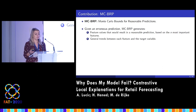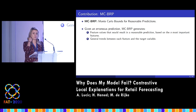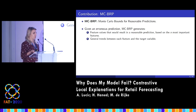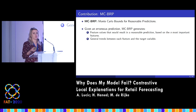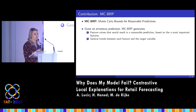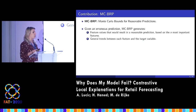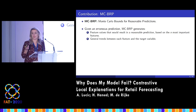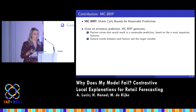The name of our method is Monte Carlo Bounds for Reasonable Predictions. We're not going to go into the details of the method, so if you're interested, you should read the paper. Basically, given an erroneous prediction — where a large error can be defined, we choose a particular definition but you can choose your own — our method generates feature values that would result in a reasonable prediction based on the top most important features. In our case, we use Lime to get the most important features, but you can use SHAP or any other feature importance method.